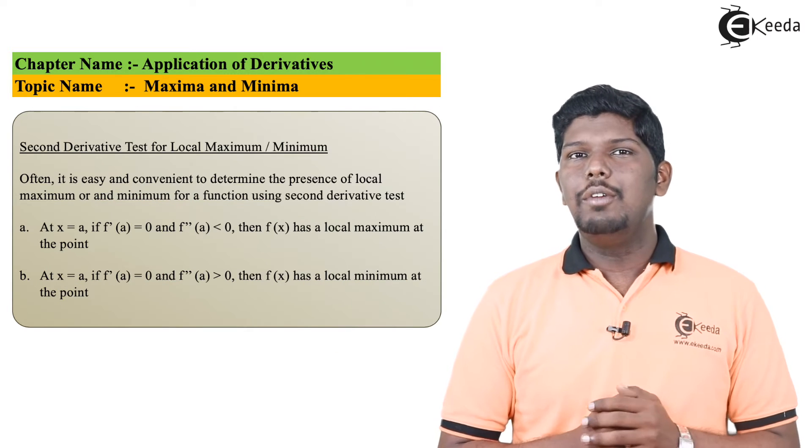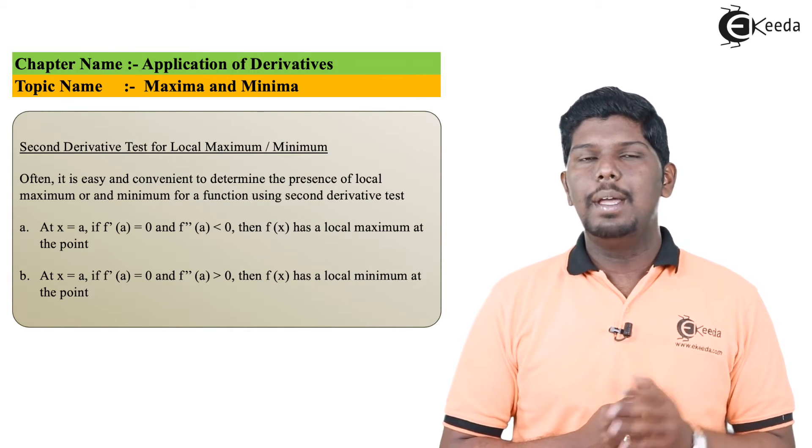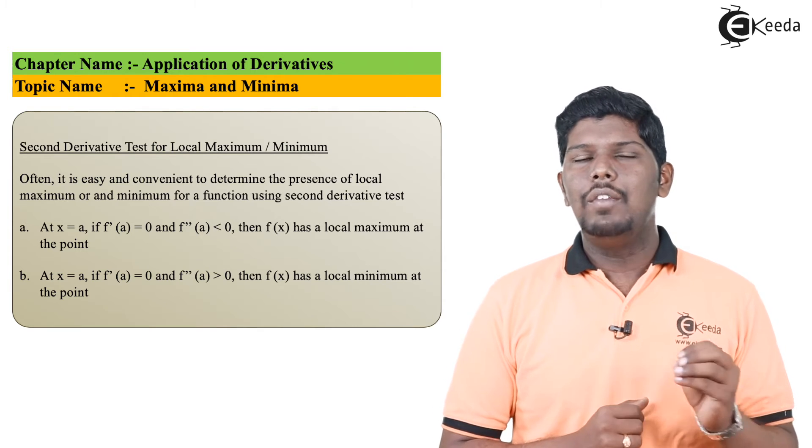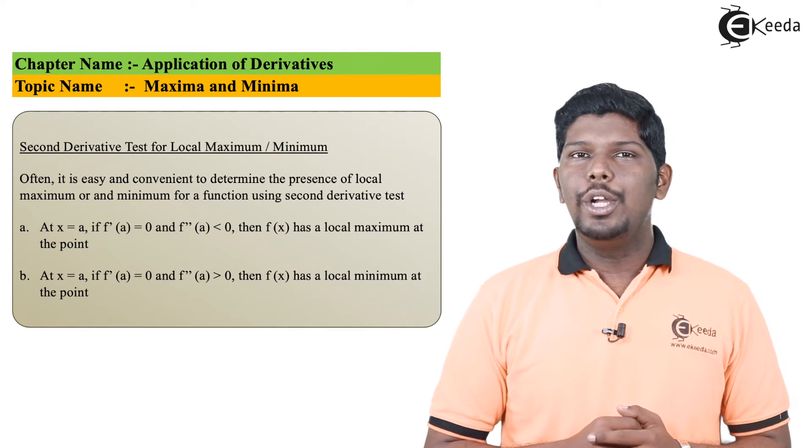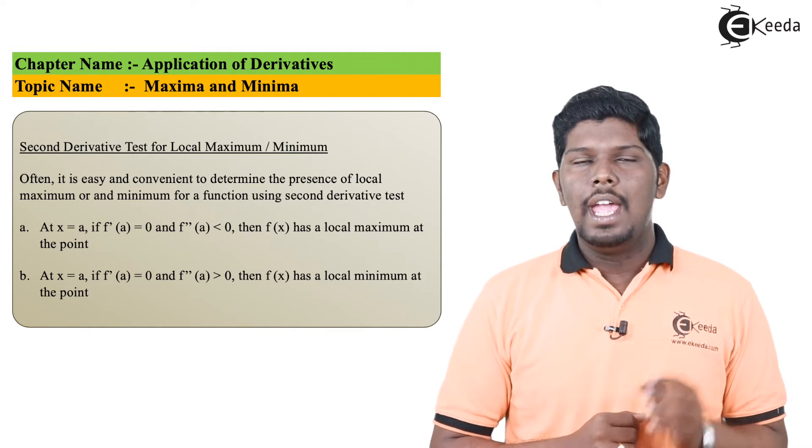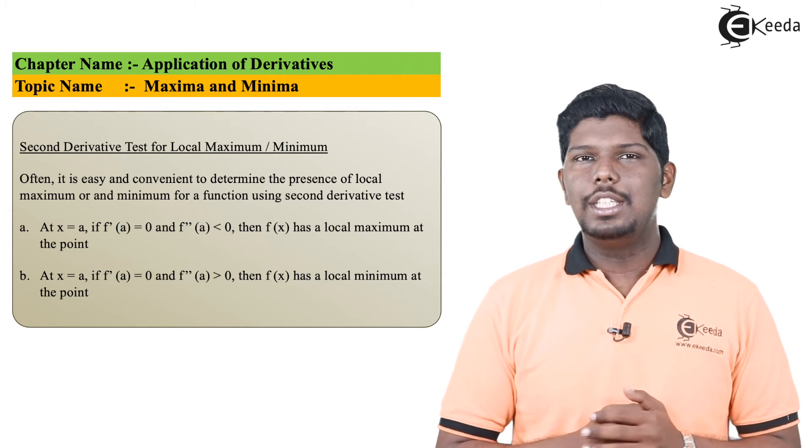Now we are going to see the second derivative test that is used to find maxima and minima. Often it is not possible to draw the graph of a function, so in such case we are going to see how to find that without using graphs, and for that, second derivative test is used.